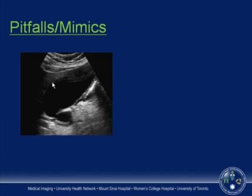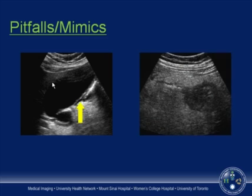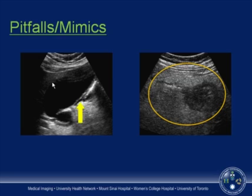Another patient with acute right upper quadrant pain had a somewhat distended gallbladder but no gallstones and some pericholecystic fluid. Re-examining the patient revealed maximal tenderness slightly infralateral to the gallbladder. Sonographic examination of that area showed focal thickening of the hepatic flexure of the colon with a surrounding inflammatory mass, an inflamed diverticulum that had perforated with a track of extraluminal gas — acute diverticulitis of the hepatic flexure mimicking cholecystitis.